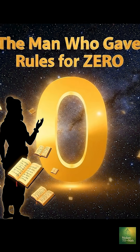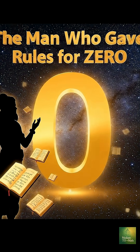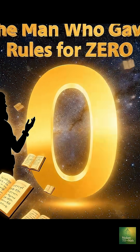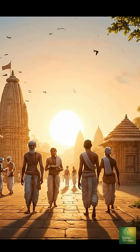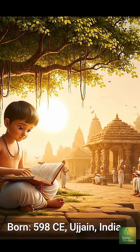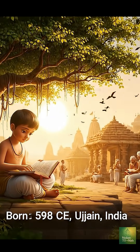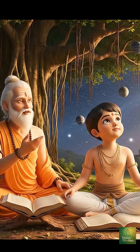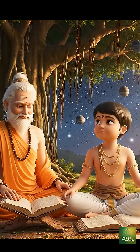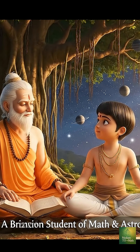Do you know who gave us the first rules for zero and negative numbers? Meet Brahmagupta. Brahmagupta was born in 598 CE in Ujjain, the great learning hub of ancient India. From childhood, Brahmagupta was a brilliant student, deeply fascinated by numbers and the stars above.